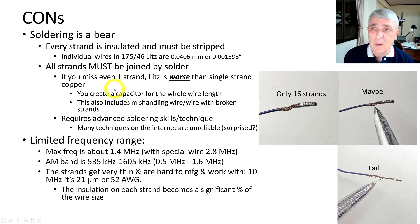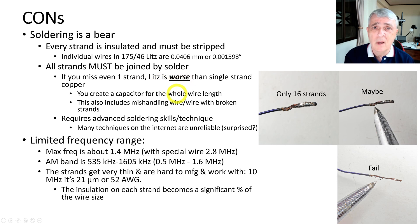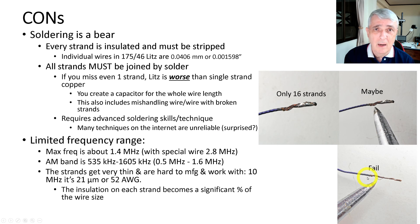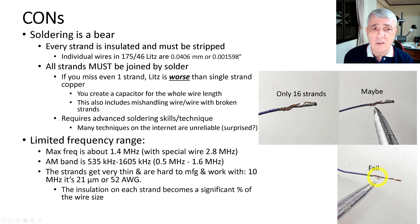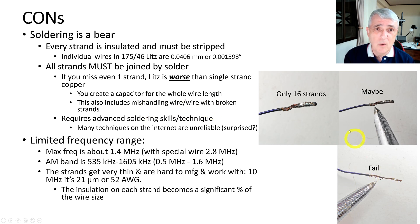Why is that so important? Because if you miss even one strand, litz wire is actually worse than single-strand copper. That one unconnected strand becomes a capacitor along the entire length of the wire — you've done exactly the opposite of what you're trying to do, which is eliminate capacitance. This also applies to mishandling the wire — if one strand breaks somewhere inside, the same problem occurs.